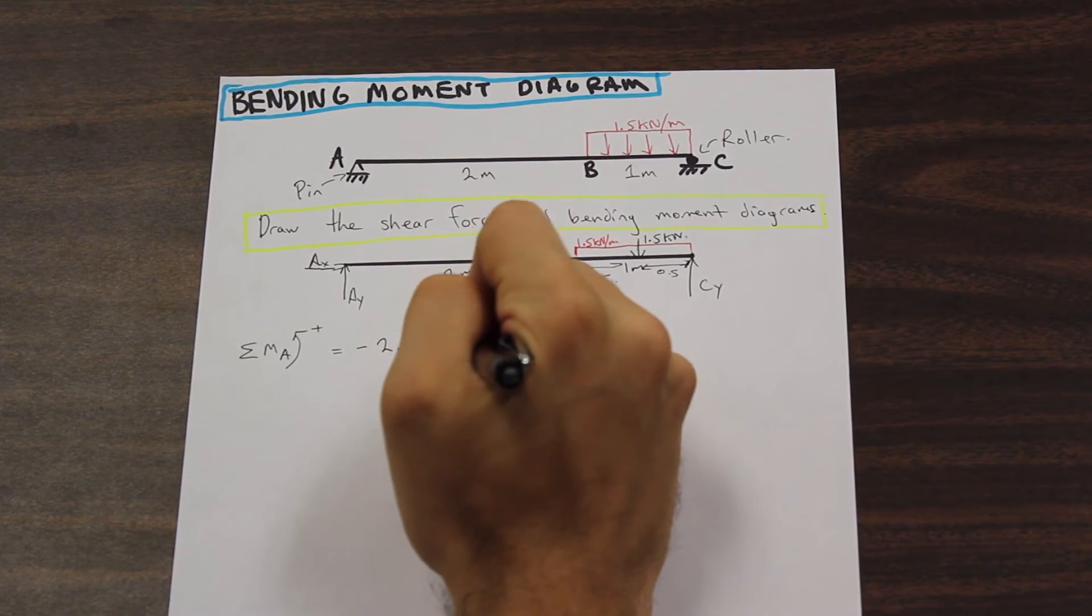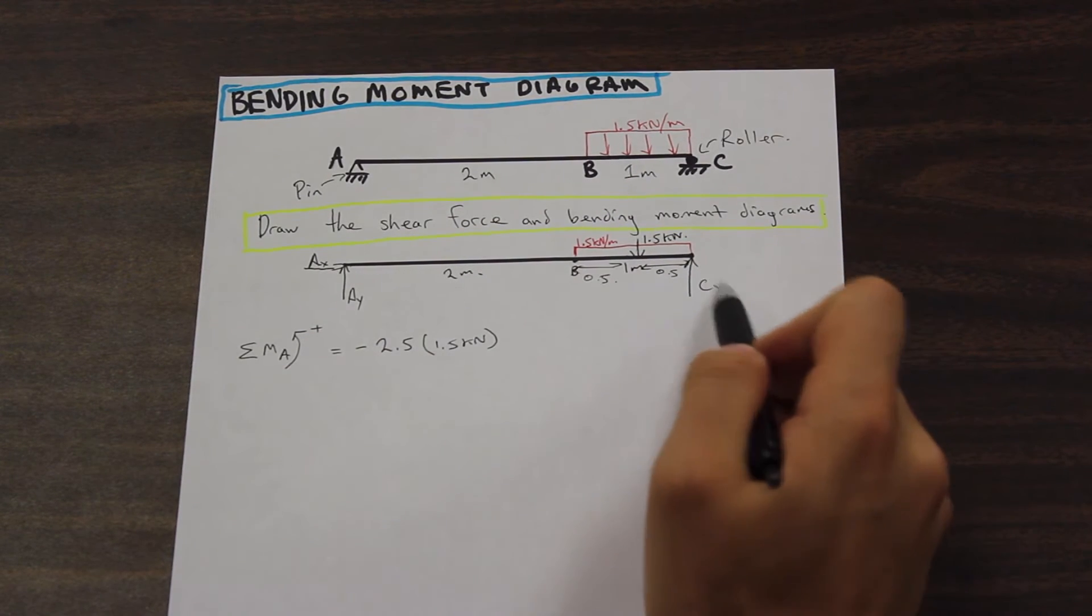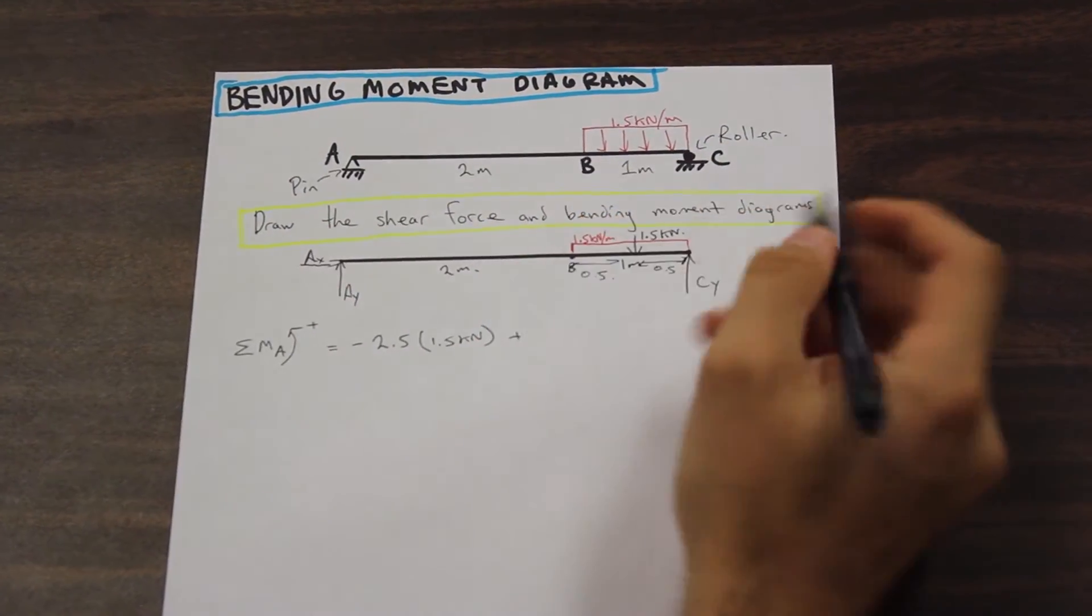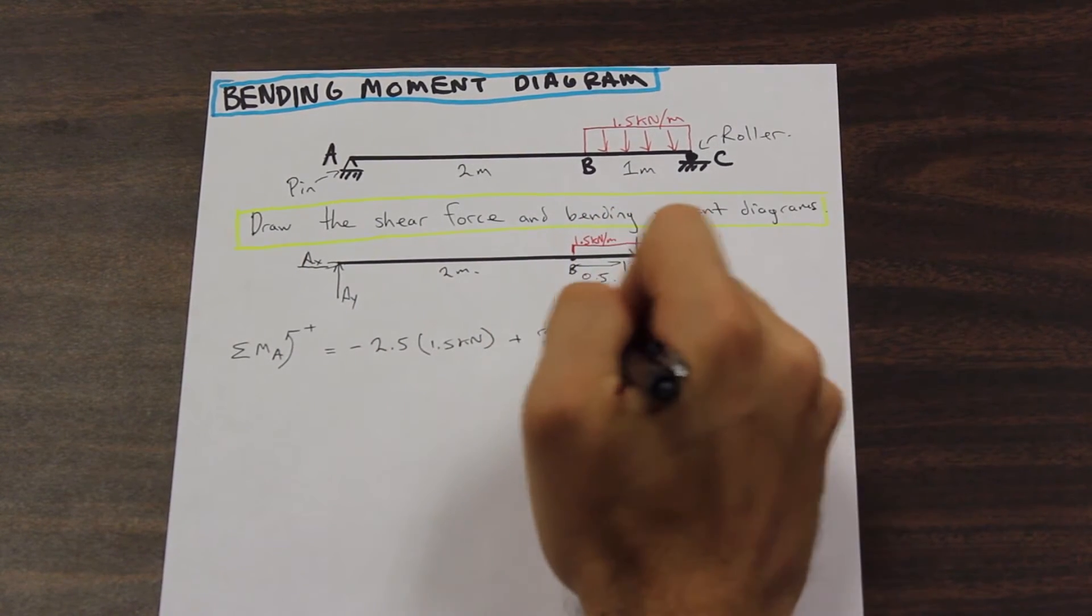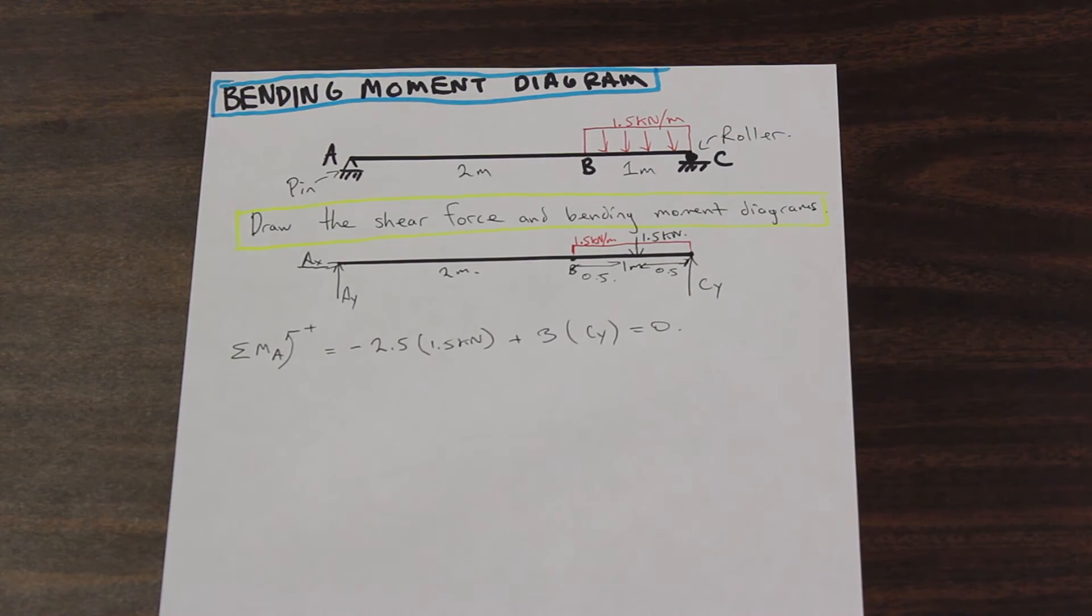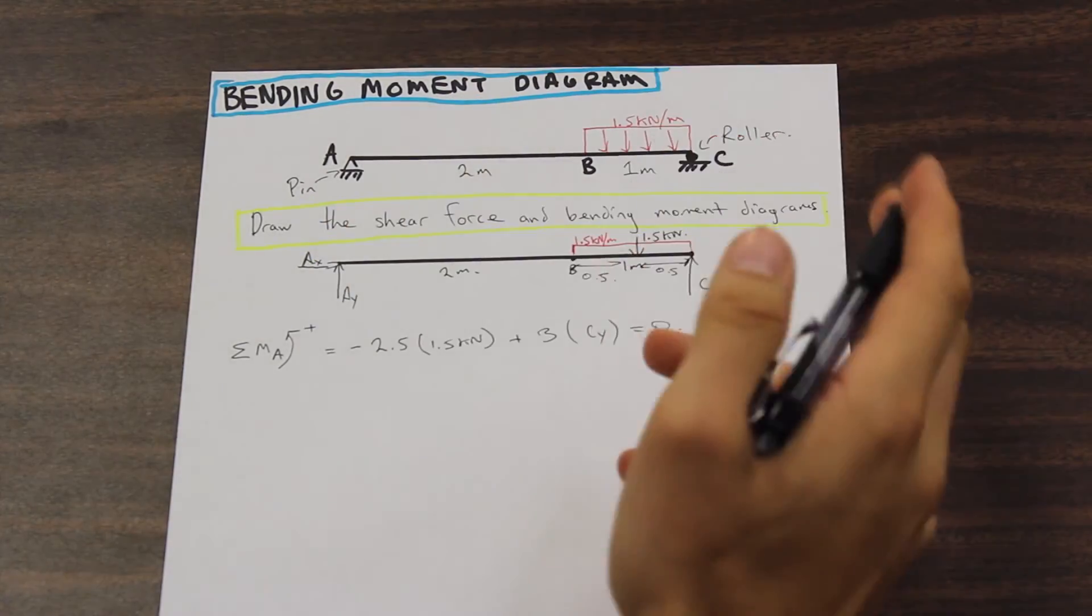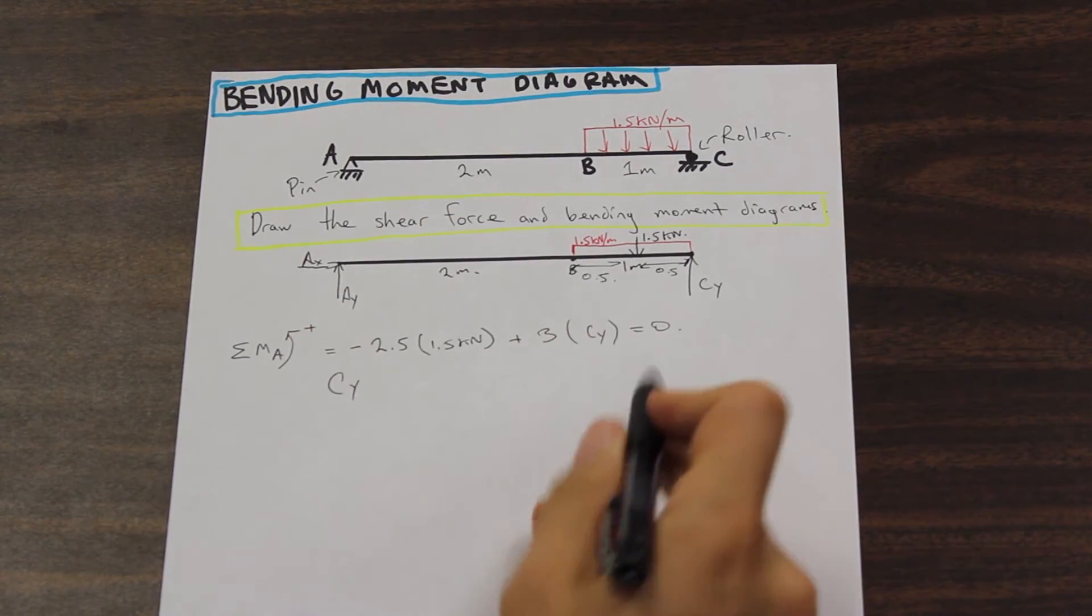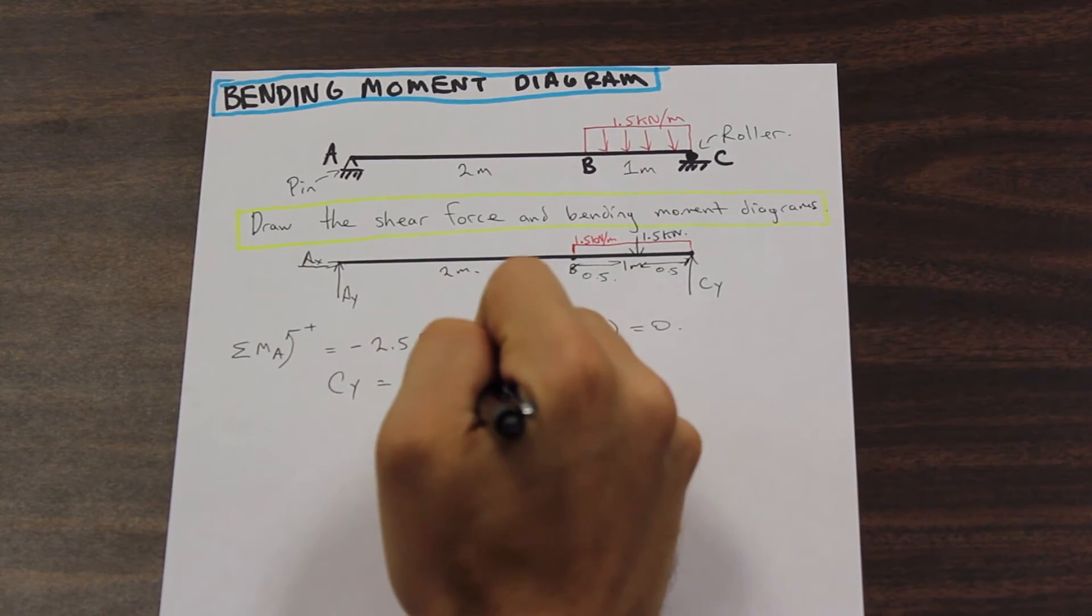And the force is acting in the negative direction. So we're going to say that that's 2.5 meters times the force, which is 1.5 kilonewton. And the only other force that's acting is CY. And CY is acting in the positive direction, so we're going to give that a plus. And the distance is the full span, which is 3 meters. So we're going to say 3 meters times CY, and we're going to equal that to 0. So solving that equation here for CY, we're going to get that it's equal to 1.25 kilonewtons.